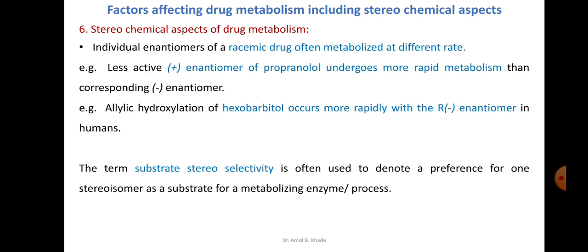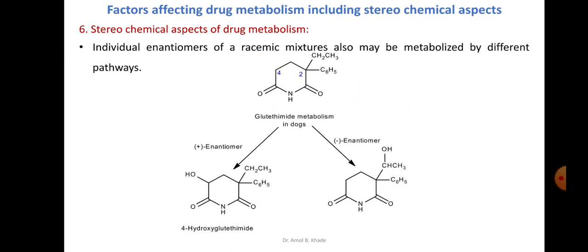Individual enantiomers of a racemic drug are often metabolized at different rates. For example, the dextro enantiomer of propranolol undergoes more rapid metabolism compared to its levo enantiomer. Allylic hydroxylation of hexobarbital also occurs more rapidly with the R enantiomer compared to its S enantiomer in humans. This preference for one stereoisomer as a substrate for the metabolizing enzyme or pathway is referred to as substrate stereoselectivity.